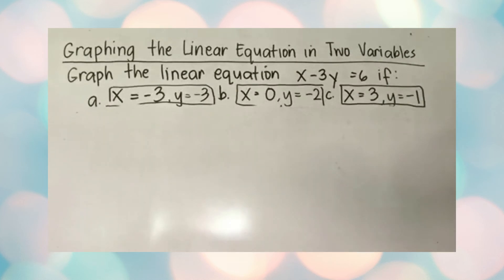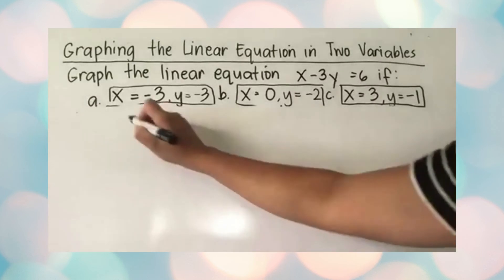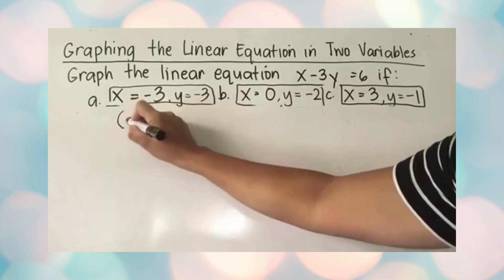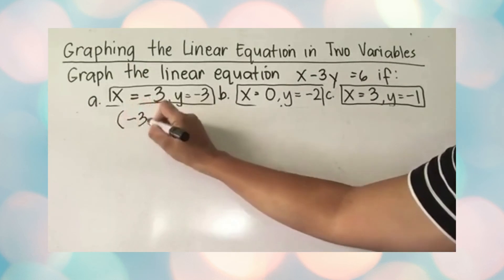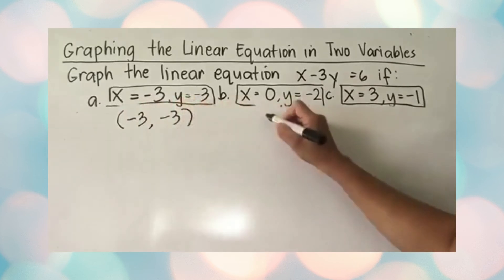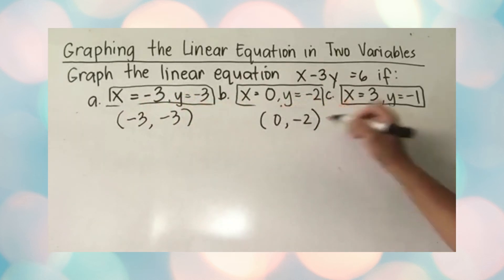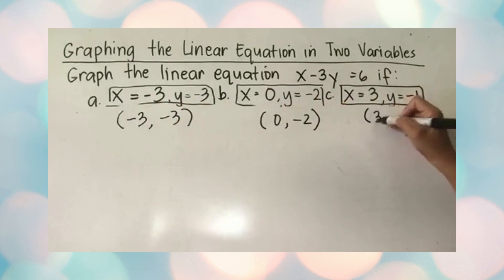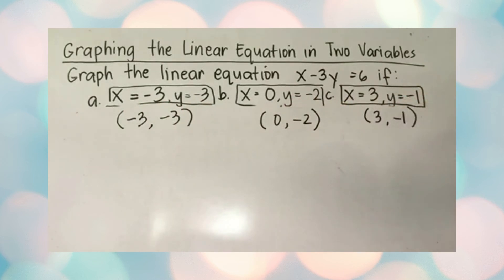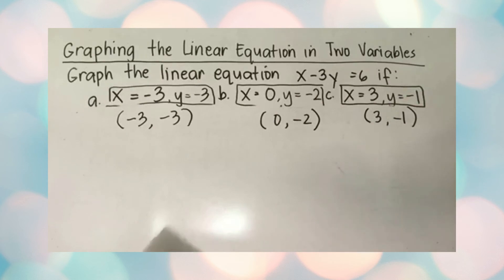From our computations, we now have three sets of ordered pairs: negative three and negative three, zero and negative two, and three and negative one. We can now plot these points on the Cartesian plane and connect them with a straight line.